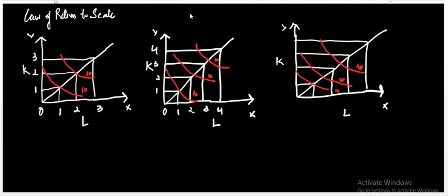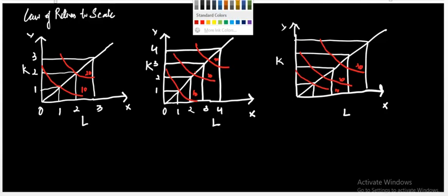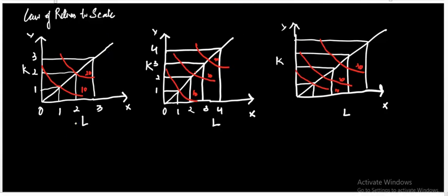Let me discuss the law of returns to scale. I have made three graphs in which I have taken labor on the x-axis and capital on the y-axis in all three cases. We know that the law of returns to scale operates in the long run, where quantity of output is a function of only variable factors — where all the factors are going to be variable. We also know about isoquants, which represent the same level of output.